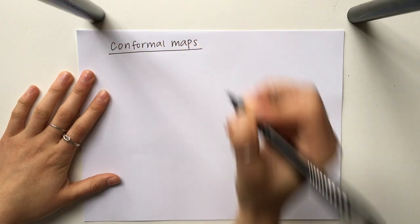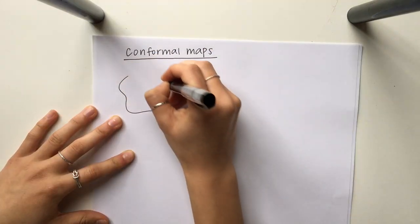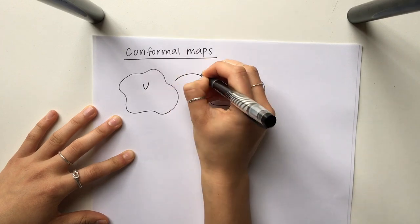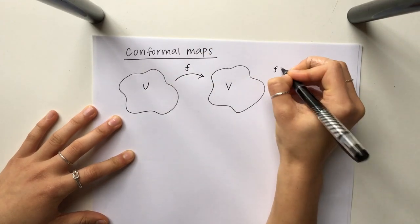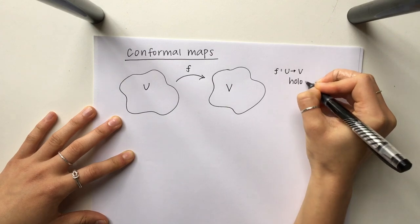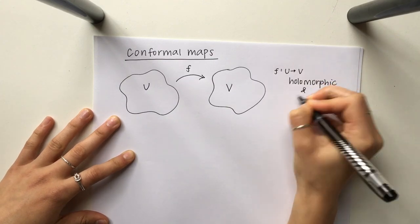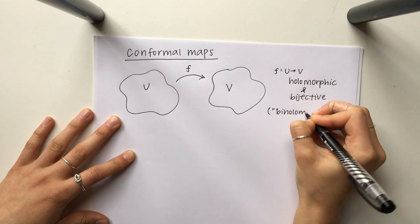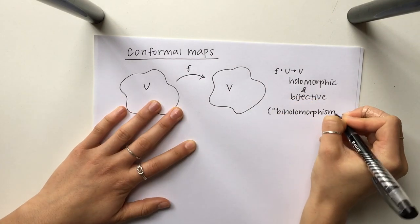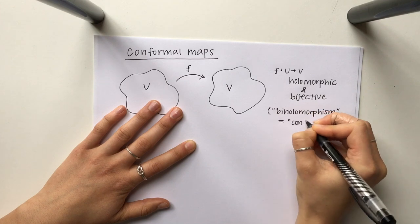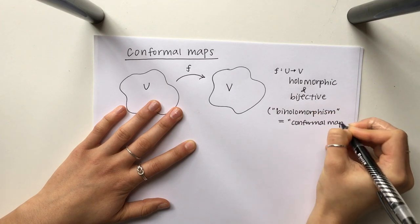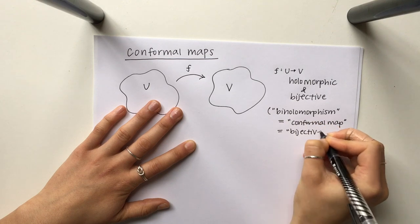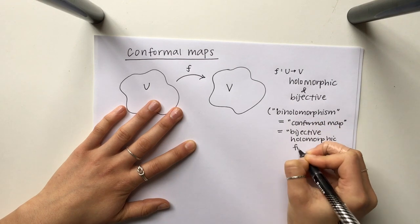The basic idea for conformal maps is that you have two open sets inside of the complex plane, and you're wondering, does there exist a function that is holomorphic and bijective? So some other words you can use are: is there a biholomorphism, or is there a conformal map, or is there a holomorphic bijective function? Those are all equivalent ways of talking about the same function f.